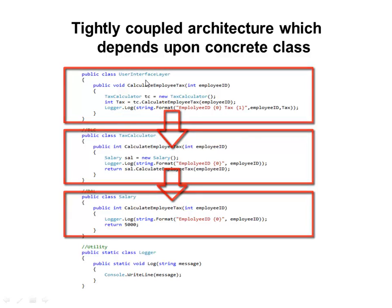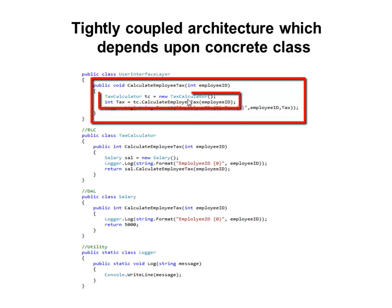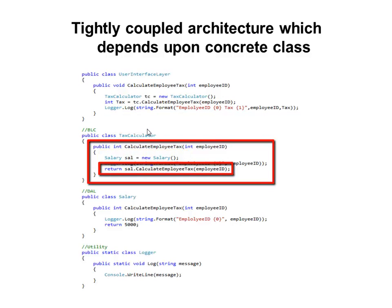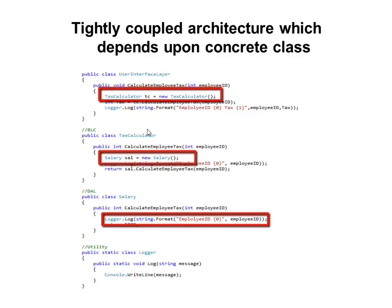All these layers have very tight coupling. The user interface layer's method CalculateEmployeeTax creates a concrete instance of TaxCalculator and then calls CalculateEmployeeTax. CalculateEmployeeTax in TaxCalculator creates an instance of a Salary class and calls CalculateEmployeeTax. The Salary class in the data access layer goes into the database and retrieves salary information based on the ID passed to it. Creating an application this way creates tight coupling — there is no abstraction whatsoever, and all instances are of concrete classes.